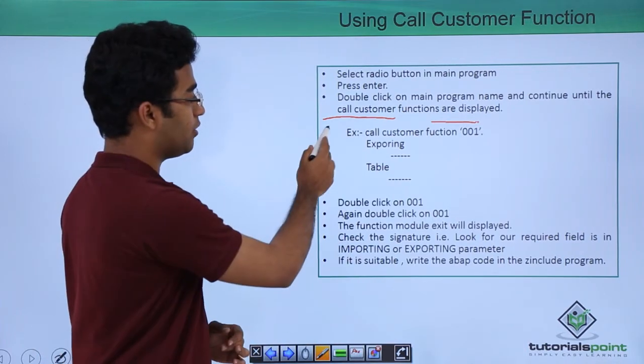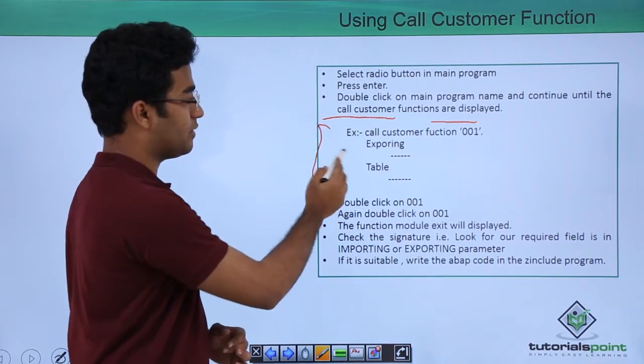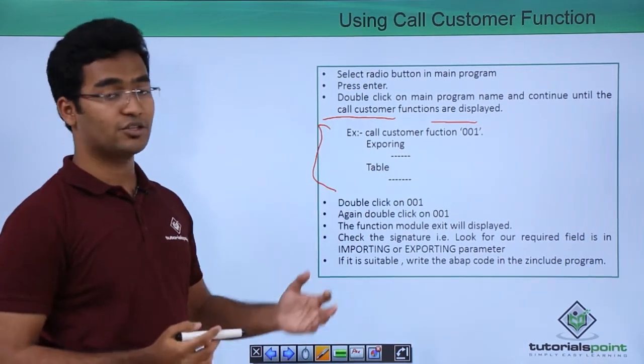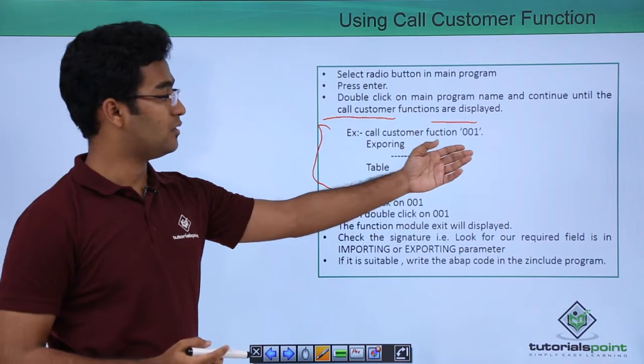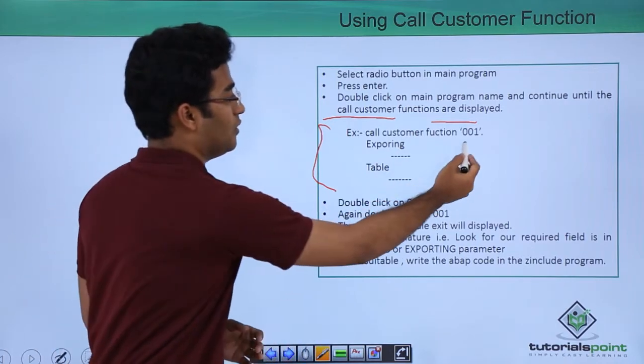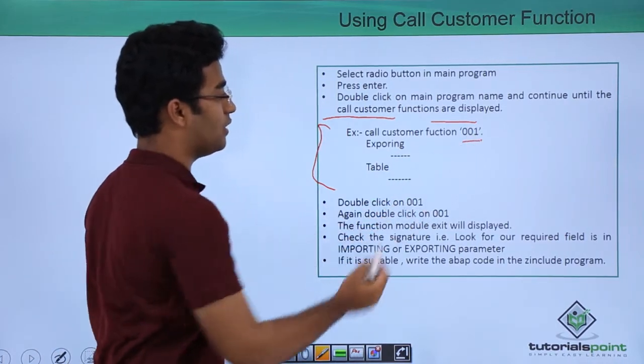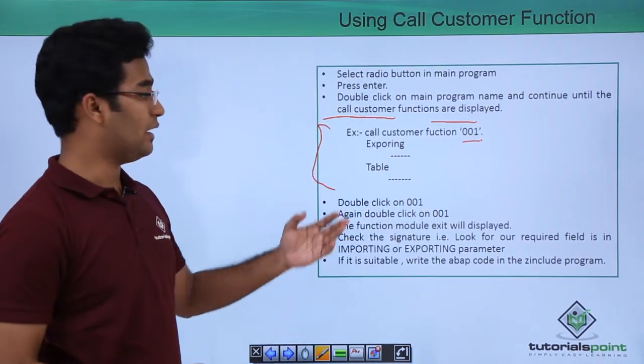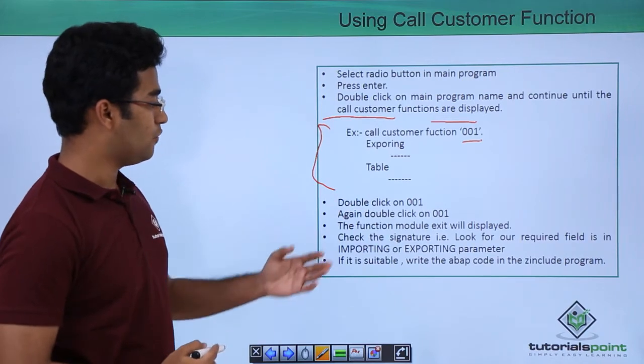Here we have a particular piece of code as an example — the Call Customer Function — and here is the name, that is the screen number, and we have exporting and table parameters here.